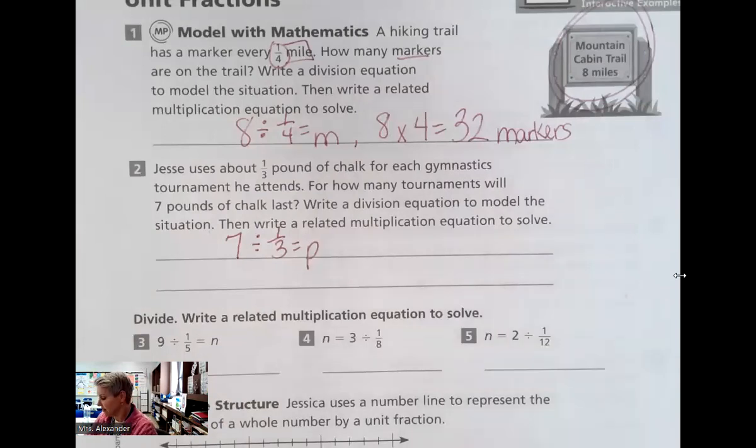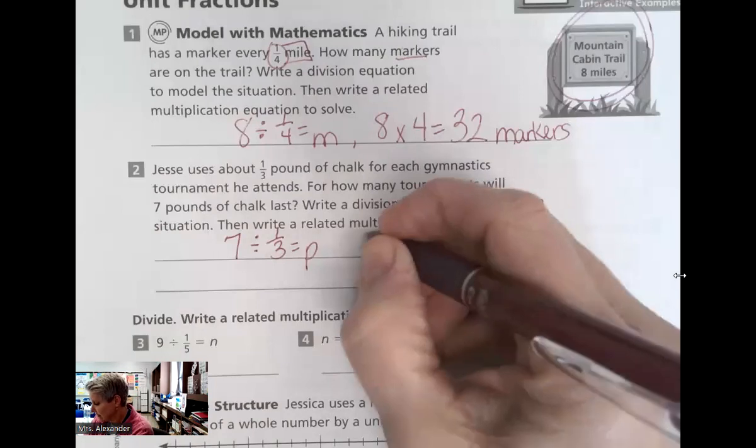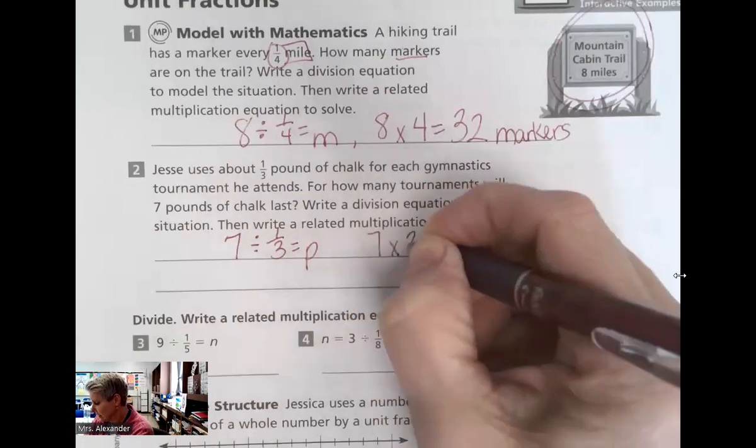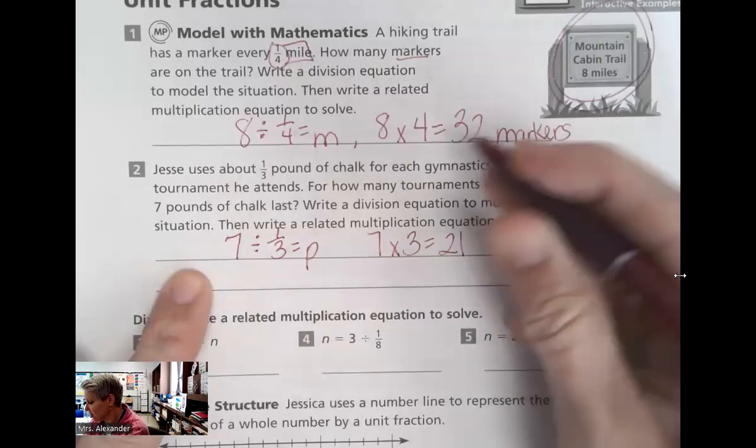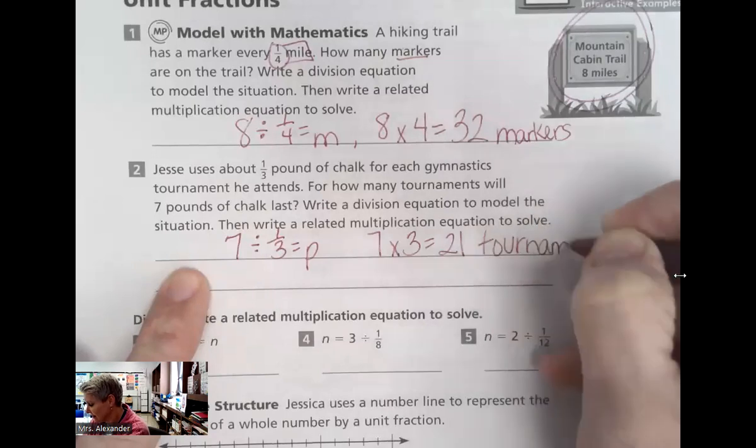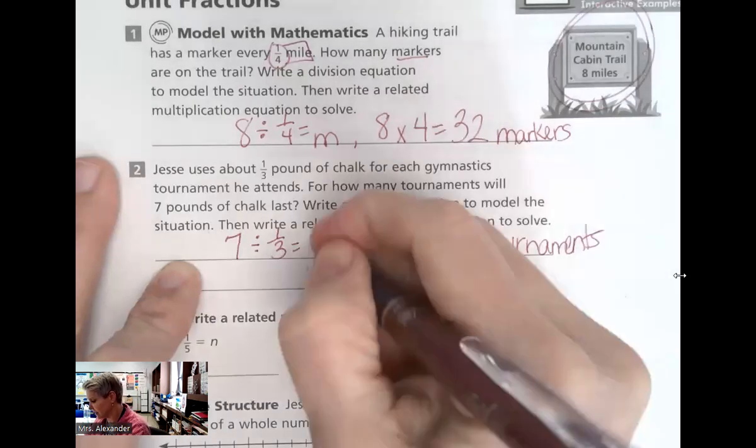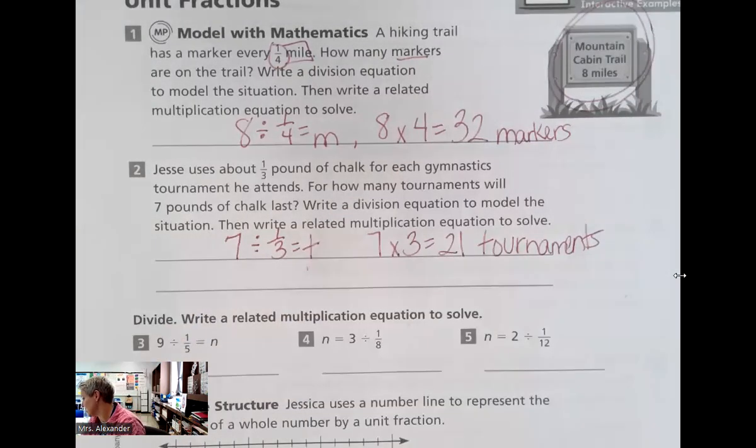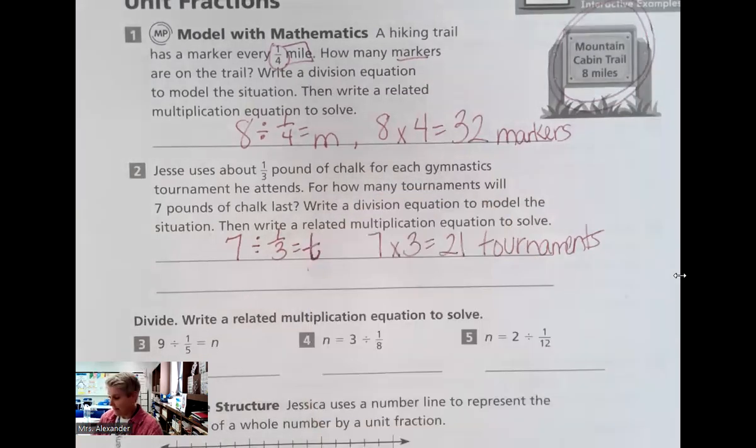There's our division equation. The related multiplication, seven times three equals 21. How many, I'm sorry, it's tournaments, not pounds. 21 tournaments. Should I change this to a T for tournaments? Our answer said how many tournaments could he use? Could he use that for? All right. Just that easy. I don't want that look like a plus sign. And that's a T.